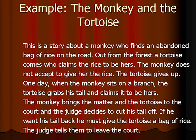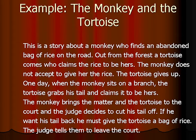The theme is like sunglasses or a funnel where you narrow down the text of the fable step by step by deleting actions that are unimportant from your theme. This is an example of a fable: 'This is a story about a monkey who finds an abundant bag of rice on the road. Out from the forest the tortoise comes, who claims the rice to be hers. The monkey does not accept to give her the rice. The tortoise gives up. One day when the monkey sits on a branch, the tortoise grabs his tail and claims it to be hers. The monkey brings the matter and the tortoise to the court, and the judge decides to cut his tail off. If he wants his tail back, he must give the tortoise a bag of rice. The judge tells them to leave the court.'